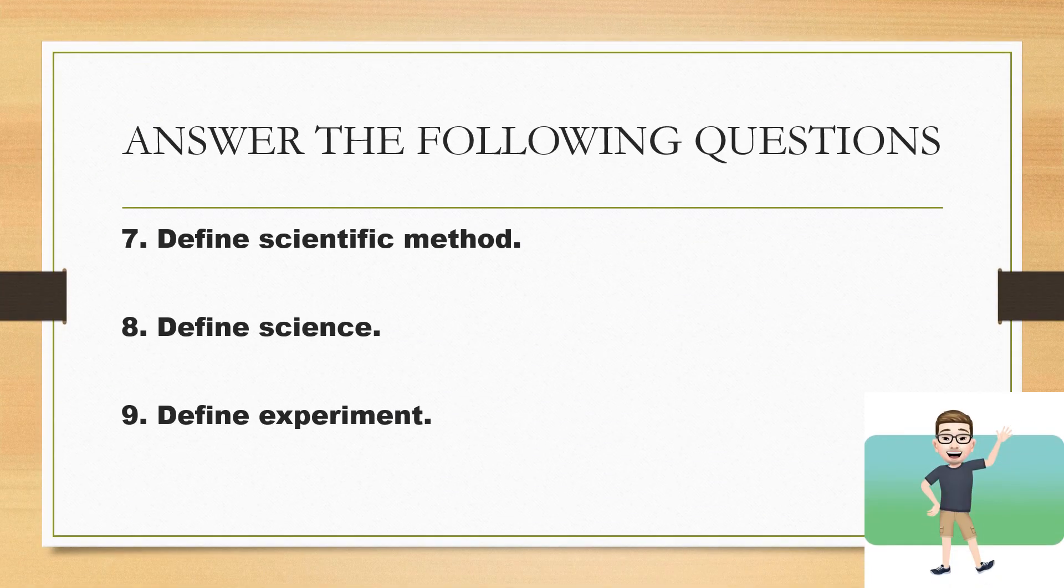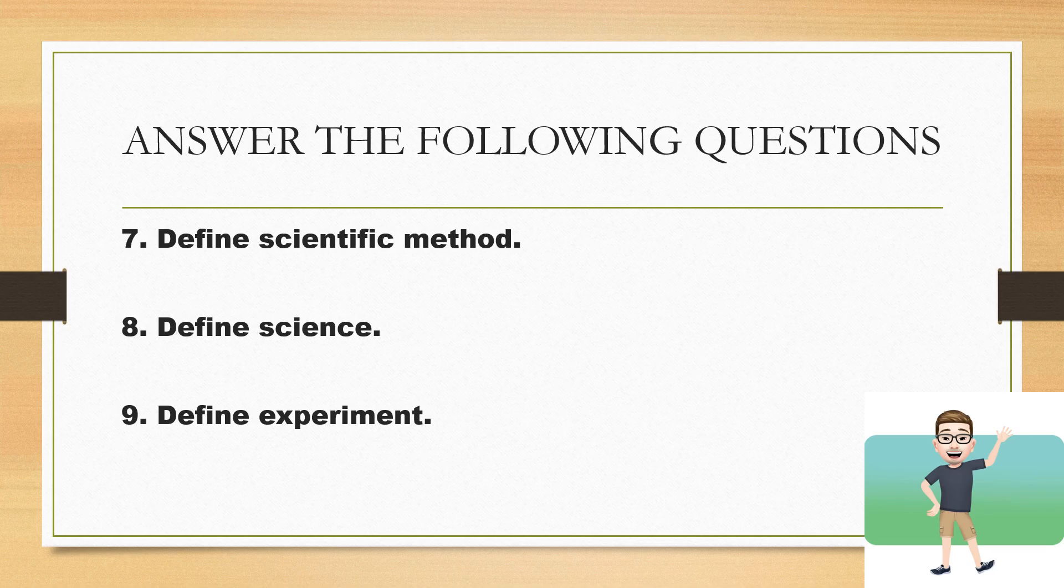Next, number 7. Define scientific method. Very easy. Next is define science. Next is define experiment. If you can define it by your own, much better. But if you can't, do some research.